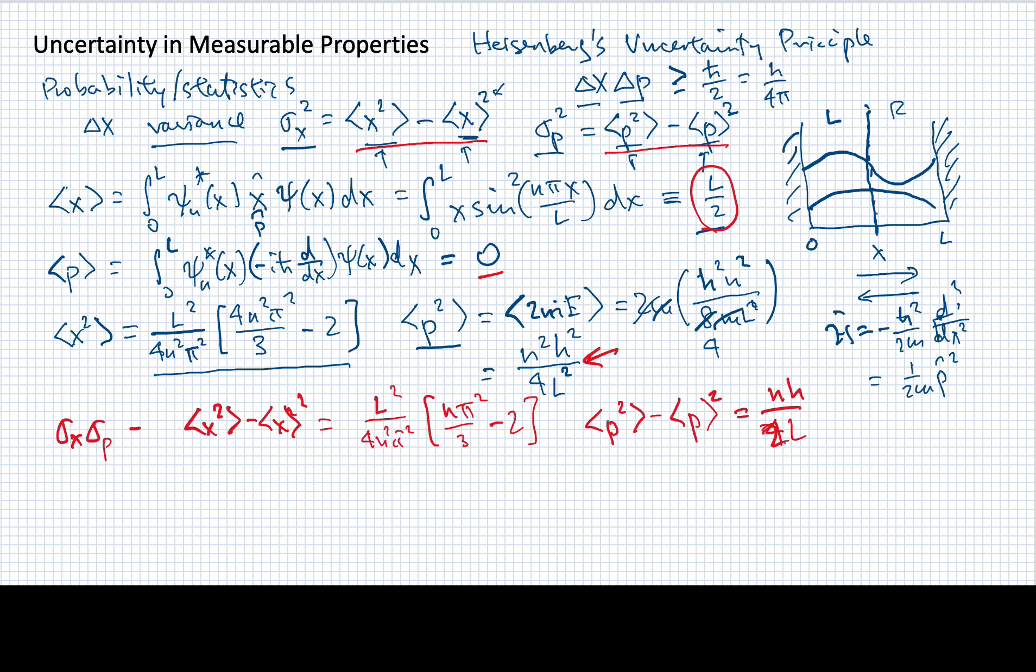So now I need to multiply this—sorry, I took the square root already. I need to multiply this by the square root of this. So when I do that, I'll find that this product of variances is going to be L over 2nπ times the square root of (n²π² over 3 minus 2) times nh over 2L.